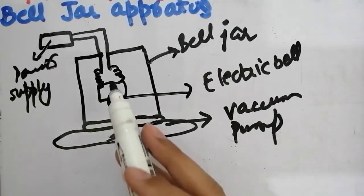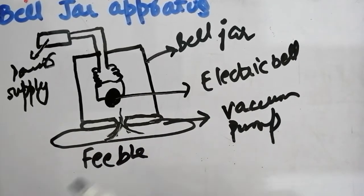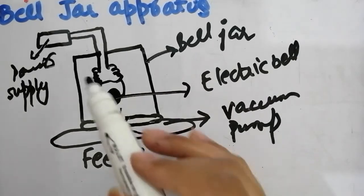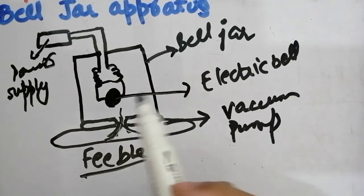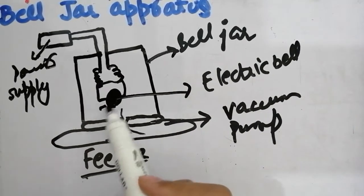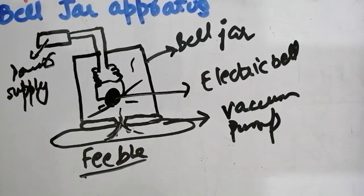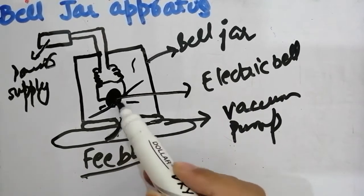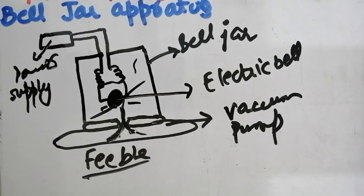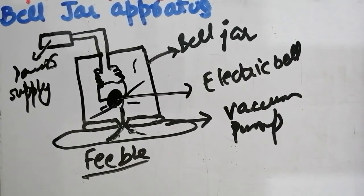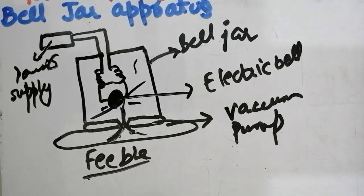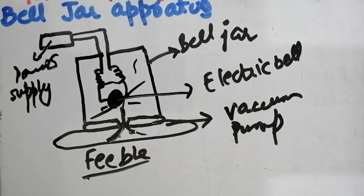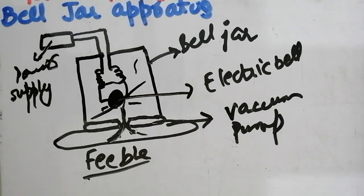Now, the vacuum pump starts pumping air out. The sound starts to fade. It is not that the bell is not ringing — it is ringing, but the sound is not being heard. After this, we start letting air back into the jar, and we can see that the sound starts to become clear again.